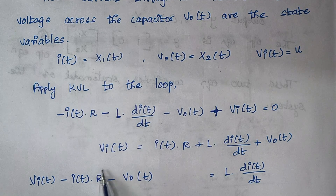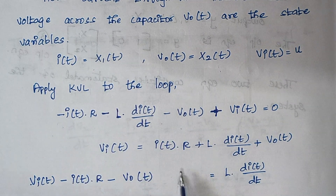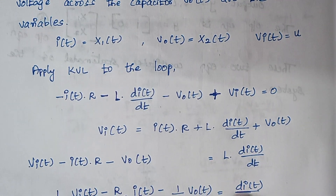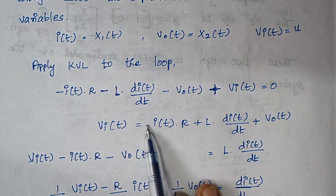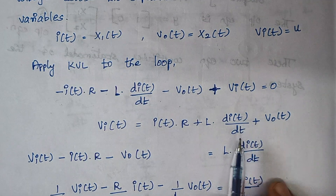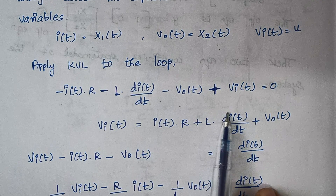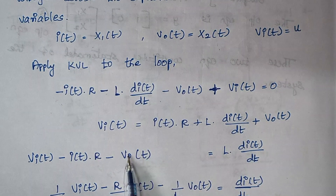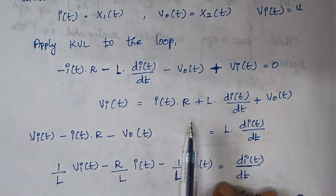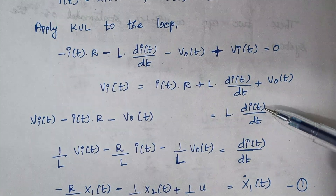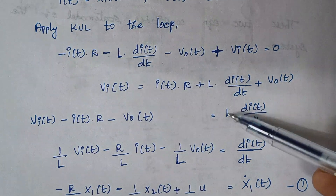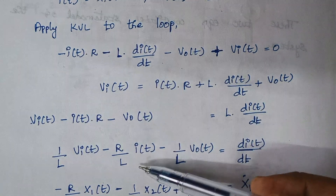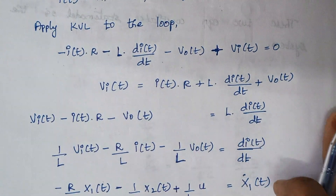Vi(t) equals the three terms moved to the right-hand side, so they acquire a positive sign. Next, I am rearranging this expression in terms of dI(t)/dt, keeping that term alone on one side and moving the other two terms to the left-hand side.